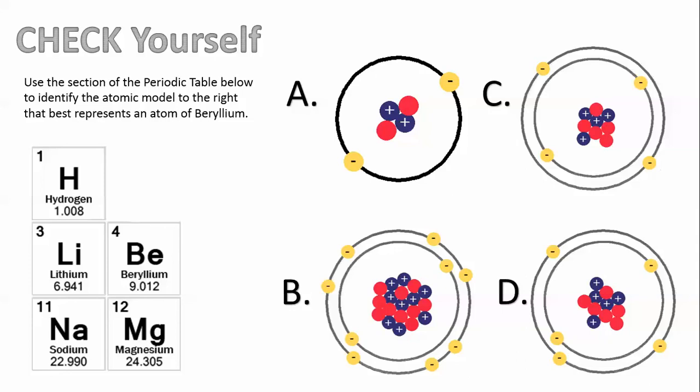Since we know the atom, find the atomic number first. Boom. It's four. Now you can do this.